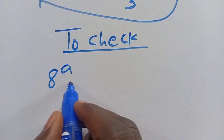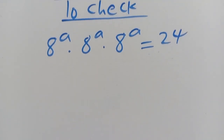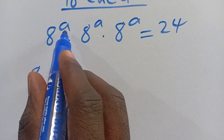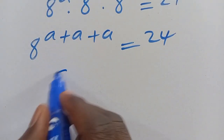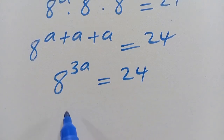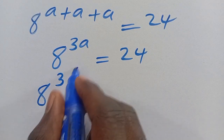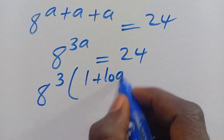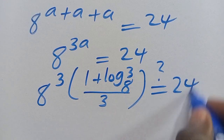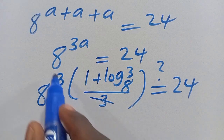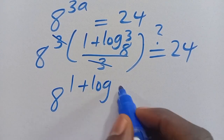Now let's verify. We had 8 to the power of A, multiplied by 8 to the power of A, multiplied by 8 to the power of A, equals 24. Adding the exponents gives 8 to the power of 3A equals 24. Substituting our value of A, we have 8 to the power of 3 times (1 plus log base 8 of 3) divided by 3. The 3s cancel, leaving 8 to the power of (1 plus log base 8 of 3).